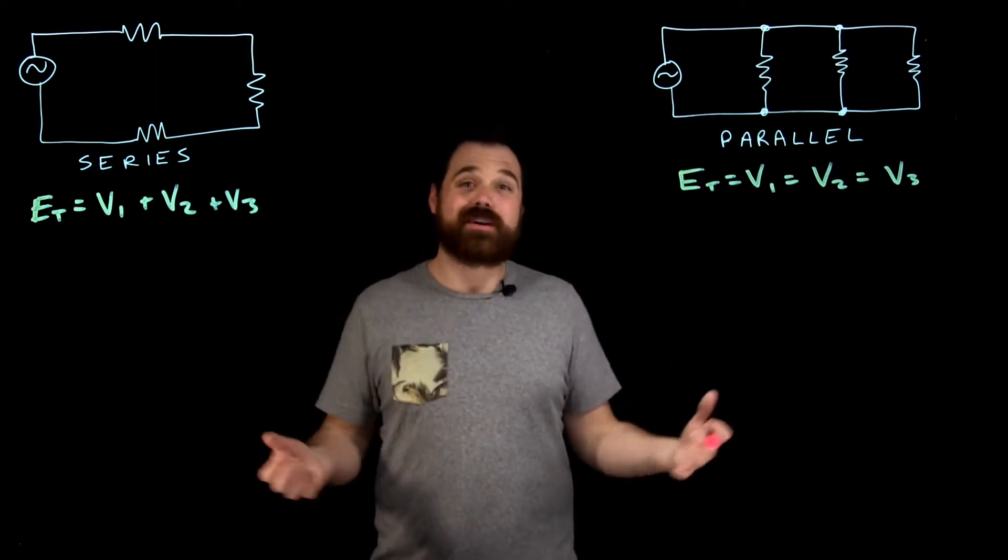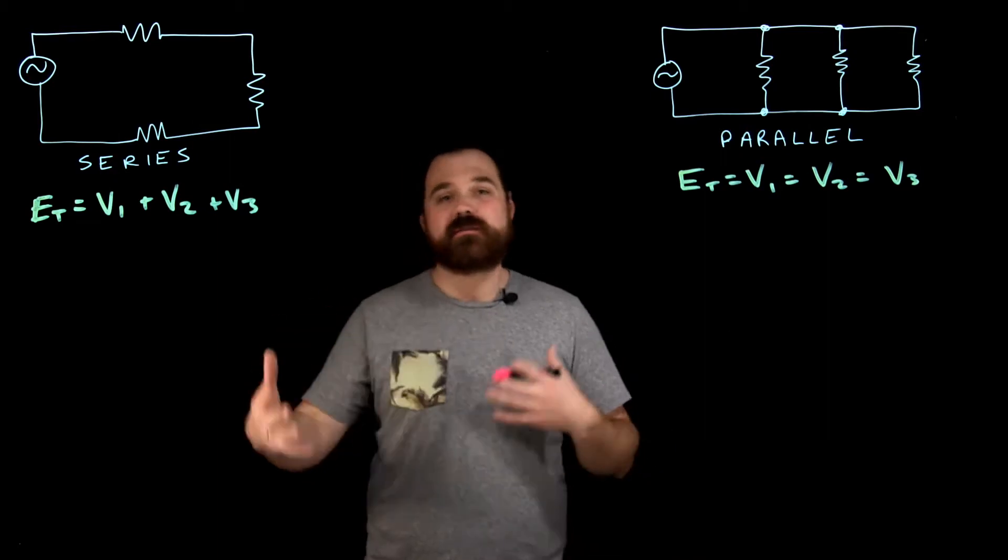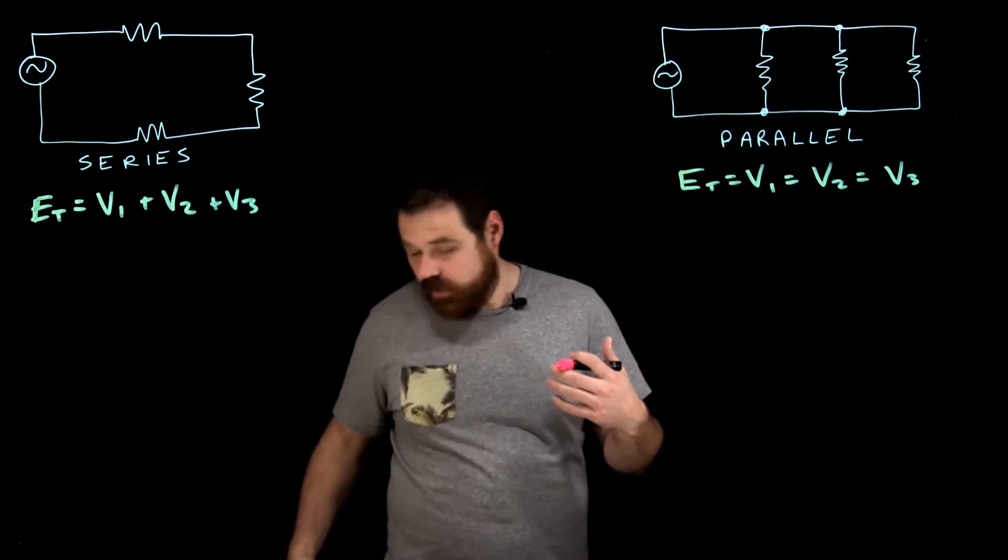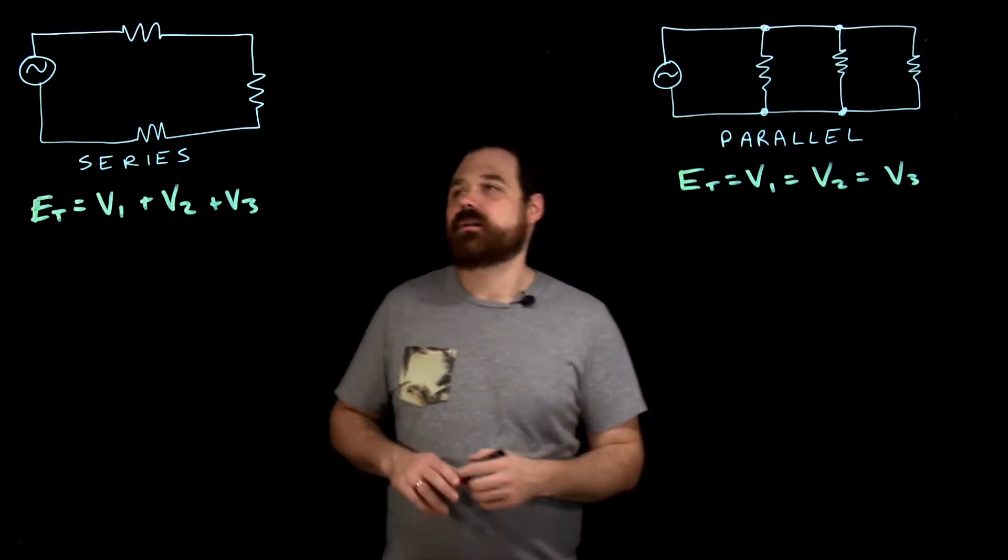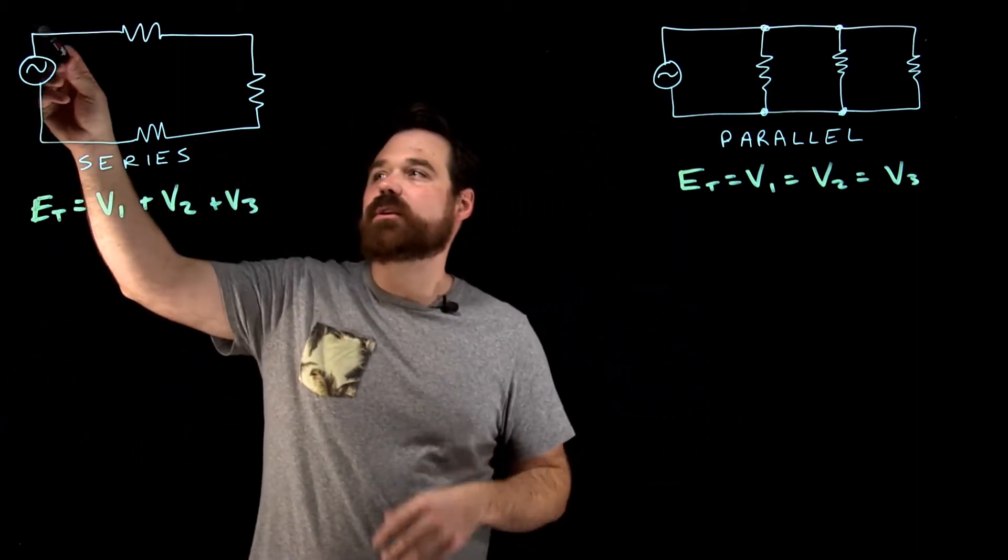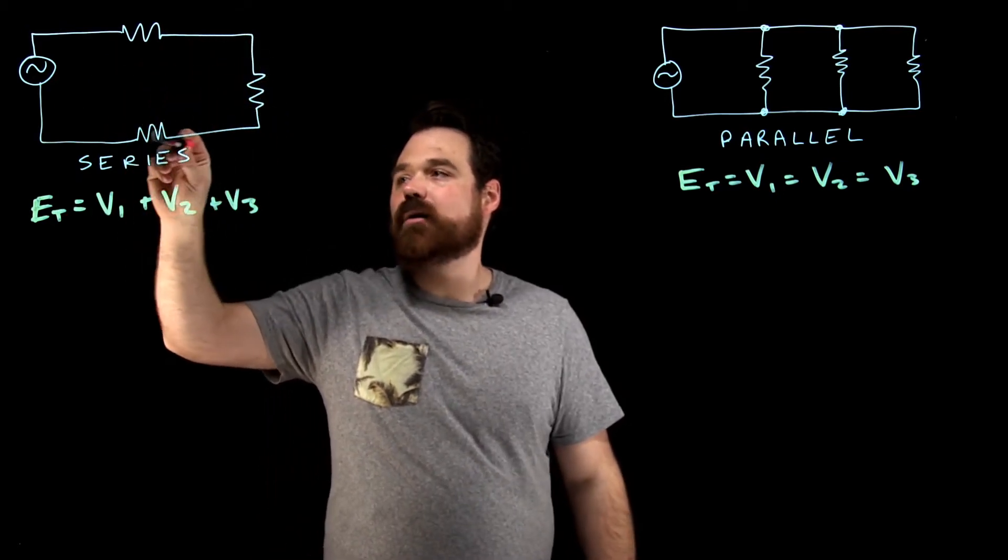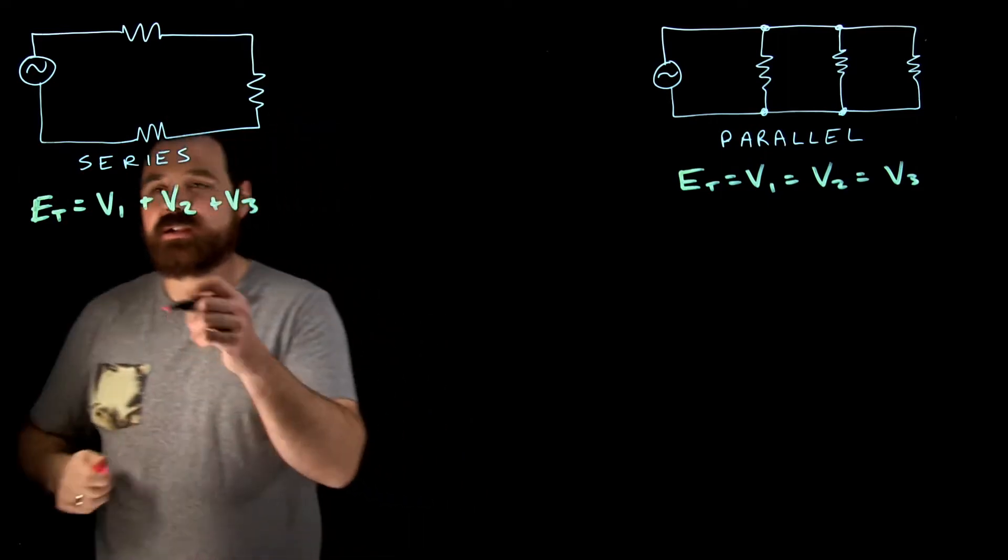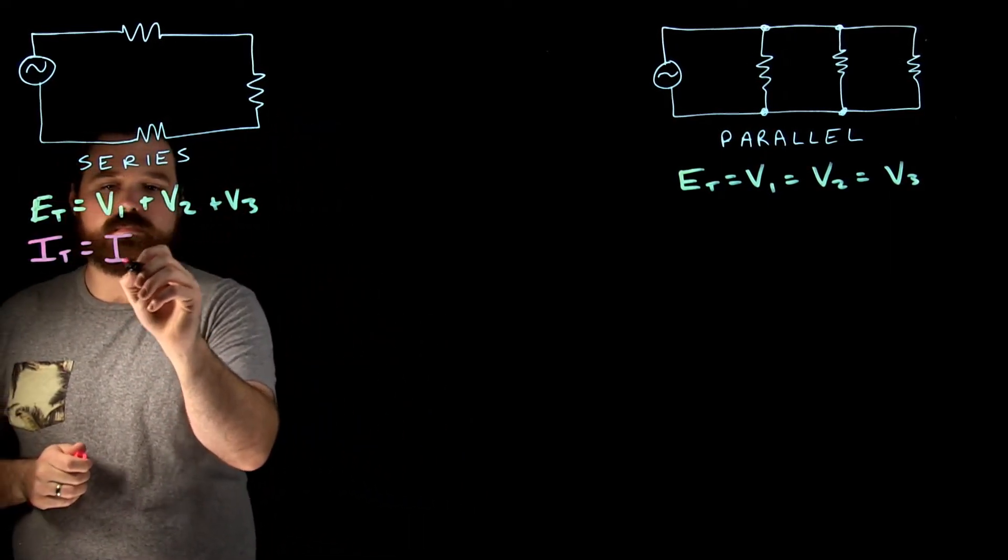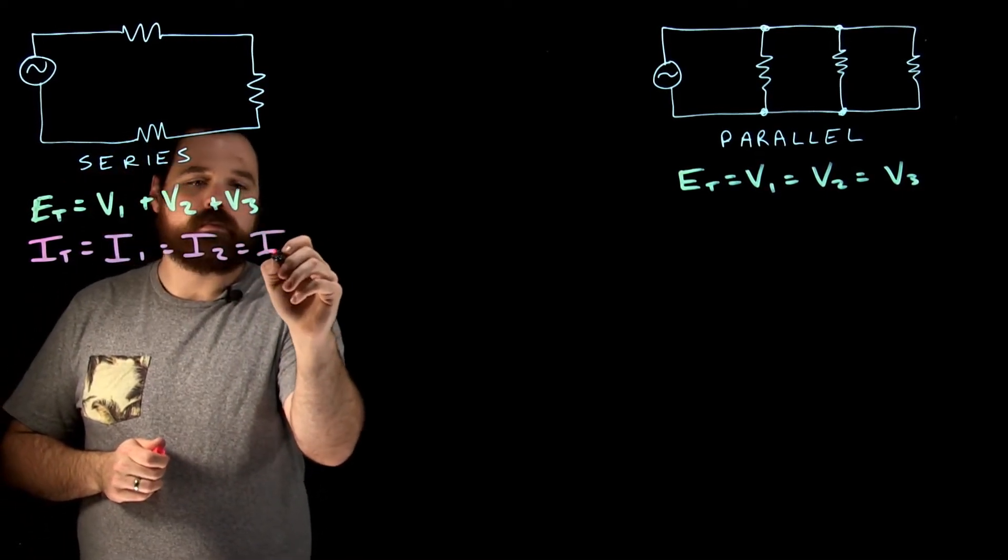Now current is the big one. As electricians, that's what we care about. How is current flowing through the circuit? How does our current add up? In this series circuit, there is only one path for current to flow. No matter where I am within that circuit, my current is going to be the same.